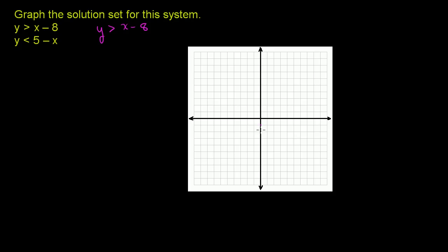So counting down to negative 8 on the y-axis — that is negative 8 right there. This is the y-axis and that is the x-axis. The graph of y equals x minus 8 has a slope of 1, so every time you move in the positive x direction, you move 1 in the positive y direction.